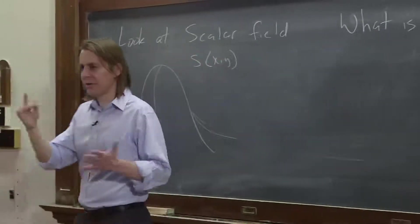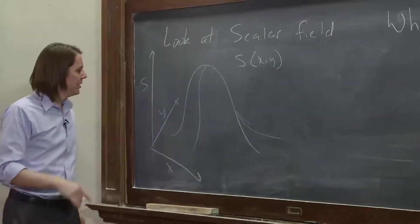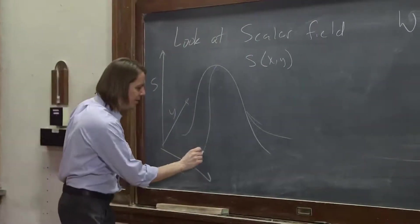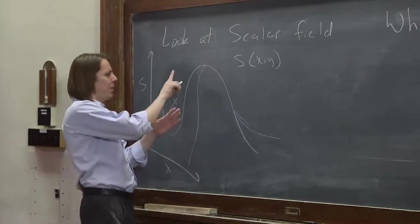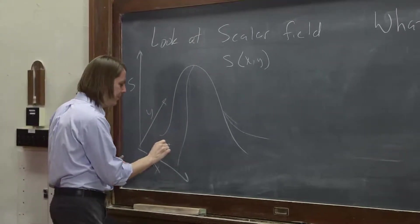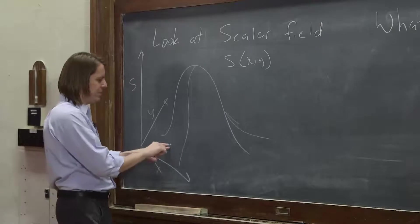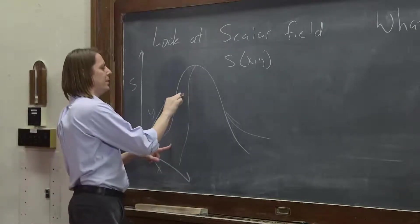If we just had a line, a single 1D plot, the derivative at each point is just a slope. So you could kind of imagine this thing is flat here, and then it goes up. So you could say, well, the derivative here, the slope here, must be small, and the slope here must be big.